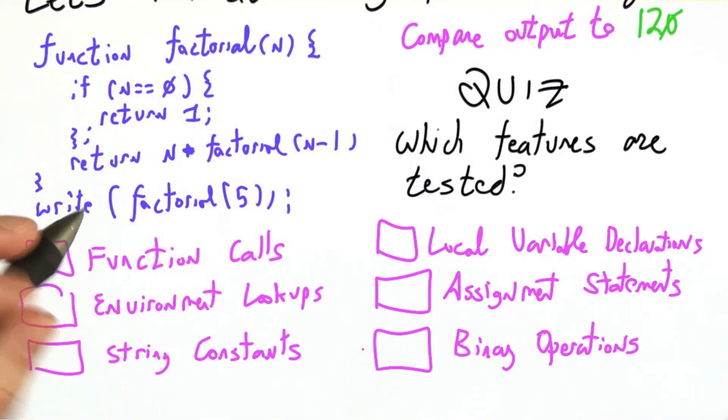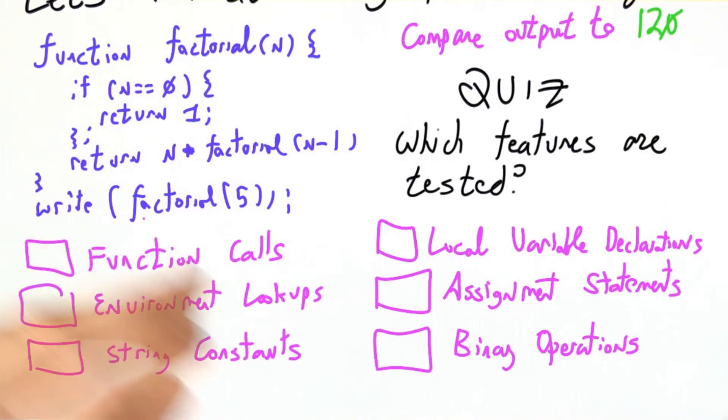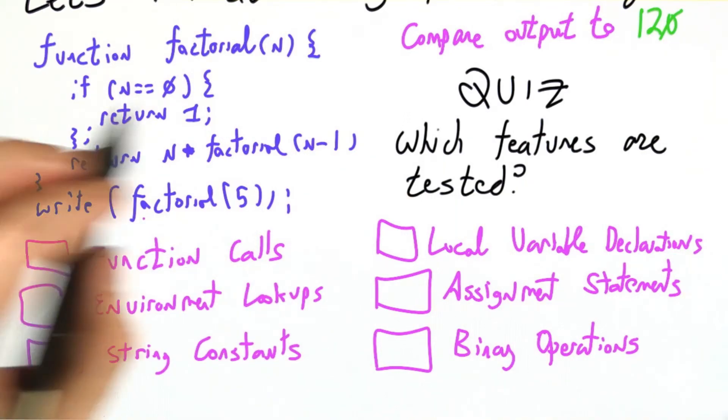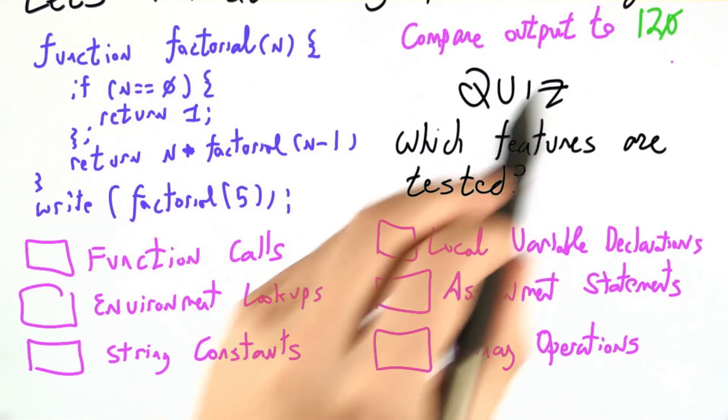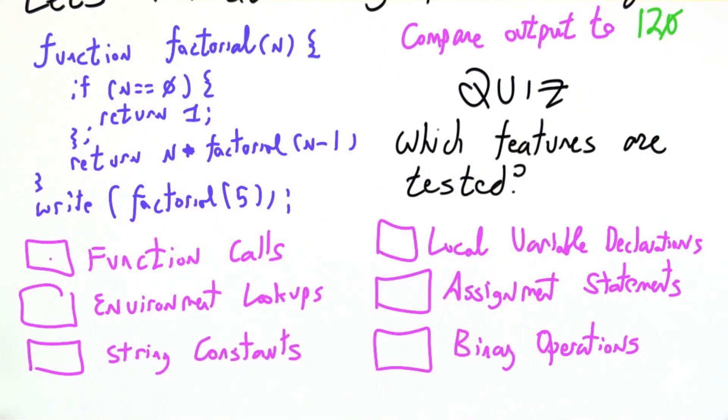As a hint, another way of looking at this problem is to imagine, let's say that our code for function calls totally didn't work. Would we get 120? If the answer is no, then we're testing function calls.